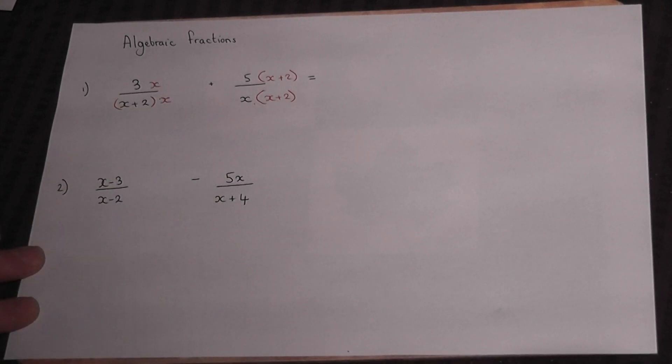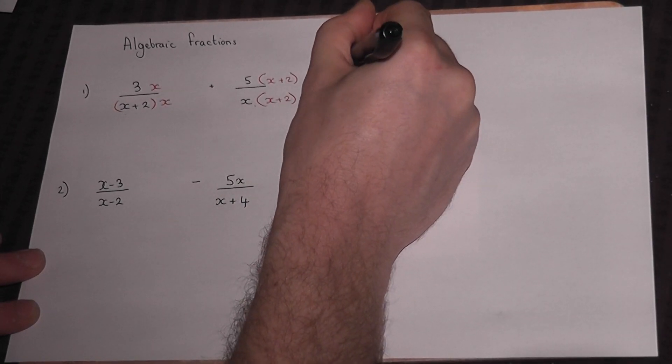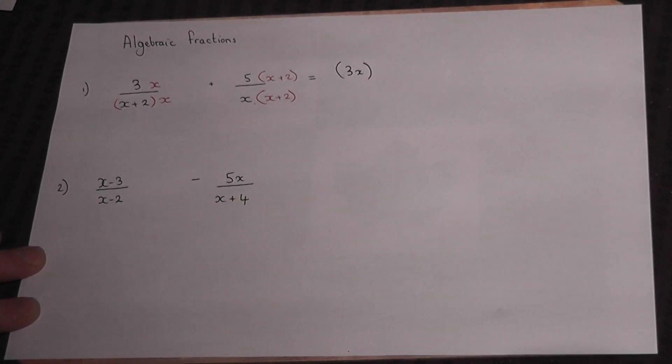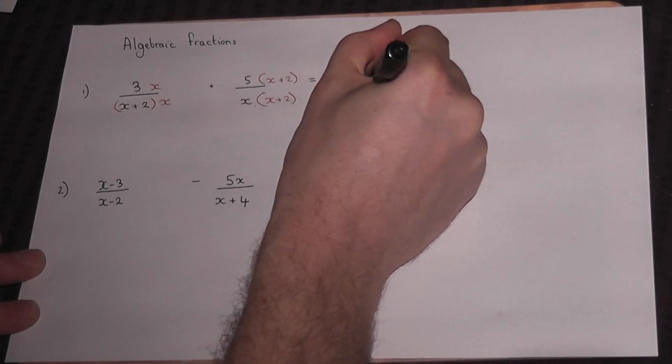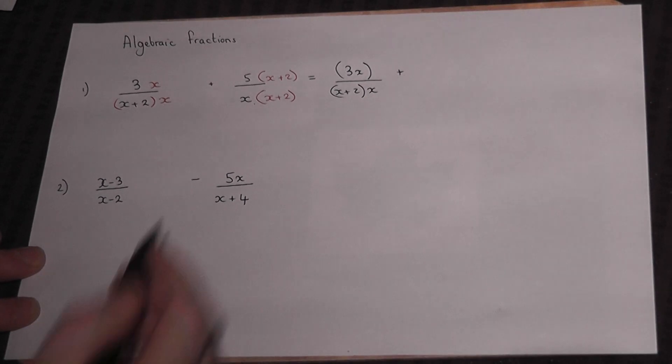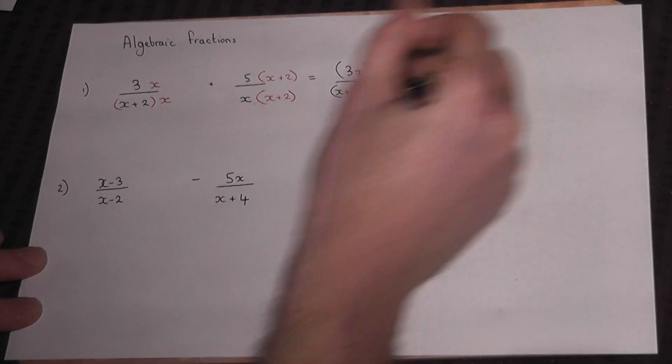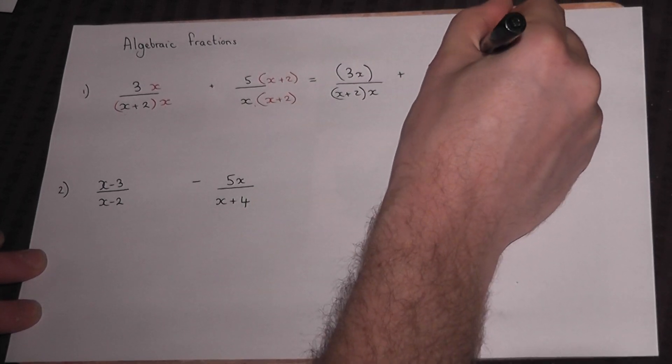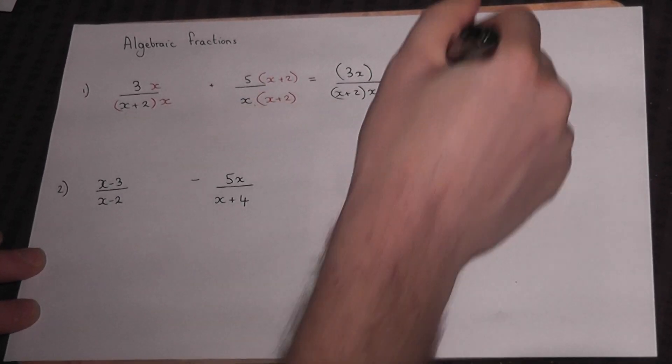Three times x gives us 3x, which I'll place in the bracket, over x+2 times x. Then we expand the other top: five times x is 5x, and five times two is 10, which we'll also place in the bracket, all over the bottom of the fraction x(x+2).